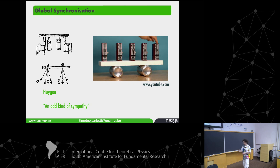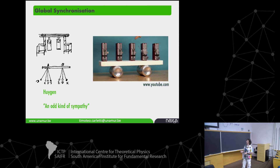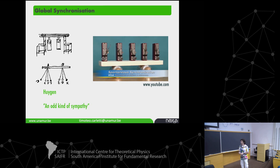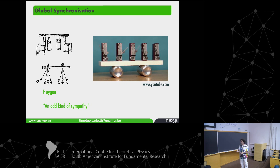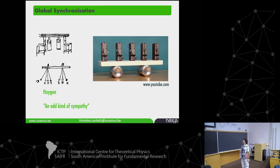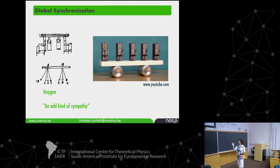The original idea of synchronization was started by Huygens, a Dutch physicist, who studied what he called 'odd sympathy' — clocks on a wall that start to be in phase or antiphase. You can find videos on YouTube of metronomes placed on a horizontal bar communicating vibration through the ground, and you can watch visually all the metronomes come into phase.